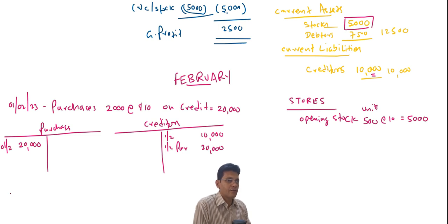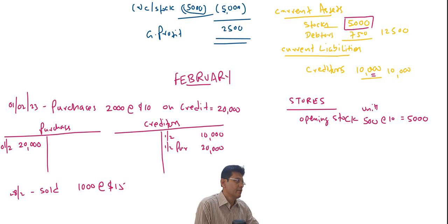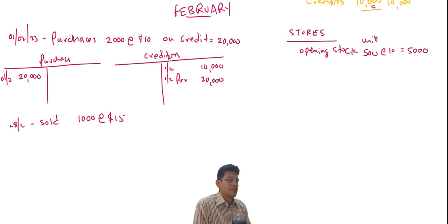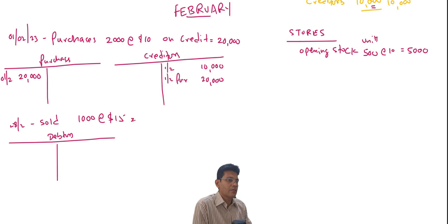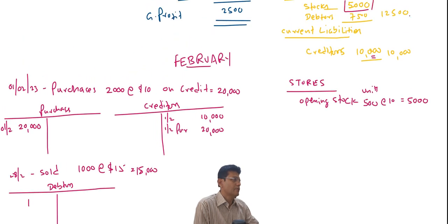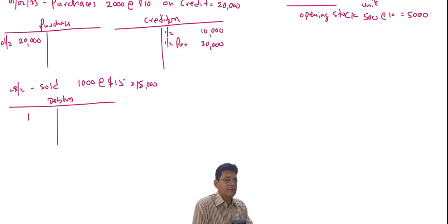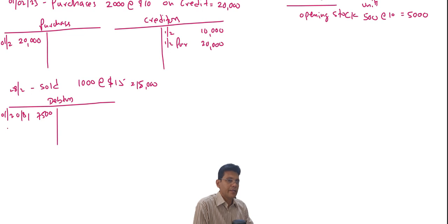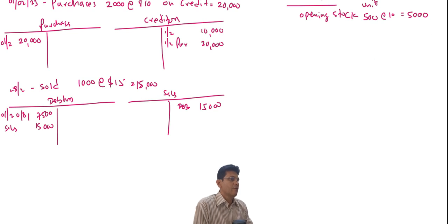On 28th February, sold 1,000 units at the rate of $15. The double entry: Debtors debited $15,000 (Debtors had an opening balance of $7,500 from January), and Sales Account credited $15,000.